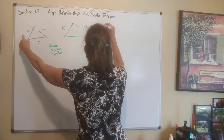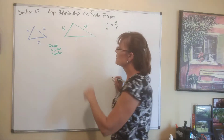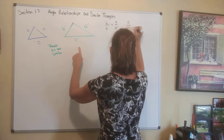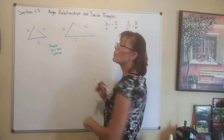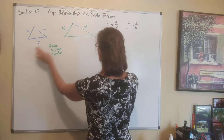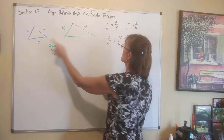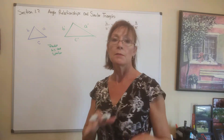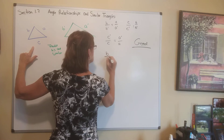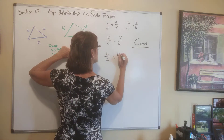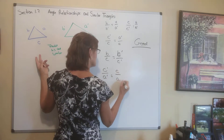The corresponding sides are proportional. We labeled A and A prime, B and B prime, C and C prime as corresponding sides. True statements include: B is to B prime as A is to A prime; C is to C prime as B is to B prime; C is to C prime as A is to A prime; or reversed: C prime is to C as A prime is to A. We can also say B is to C as B prime is to C prime, or C prime is to A prime as C is to A. These are all good proportions.